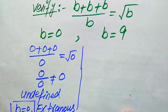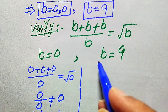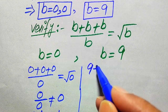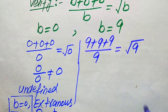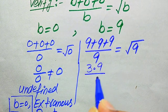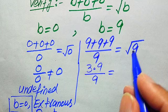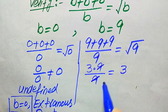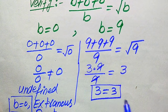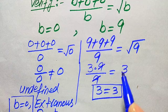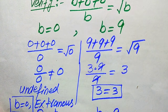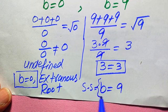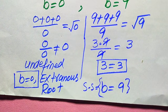Now substituting B equals 9: 9 plus 9 plus 9 divided by 9 equals square root of 9. The square root of 9 equals 3, and 9 divided by 9 gives 1, so 9 plus 9 plus 1 — simplifying, both sides equal 3. Both sides are equal, so B equals 9 satisfies the original equation. The solution set of the given equation is B equals 9.